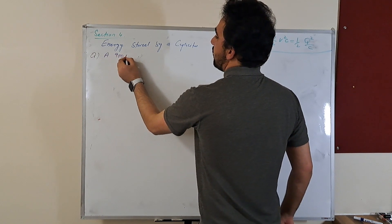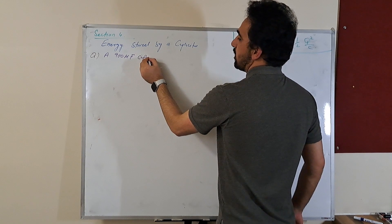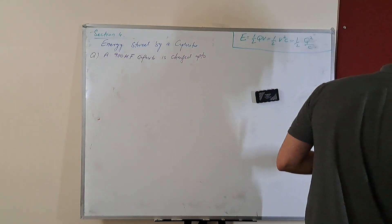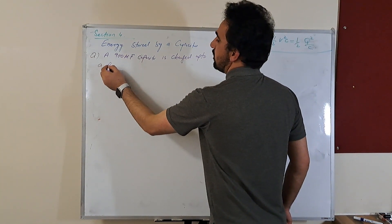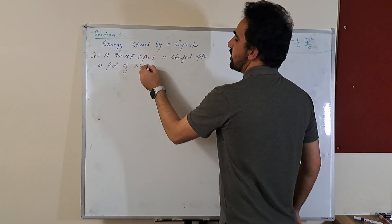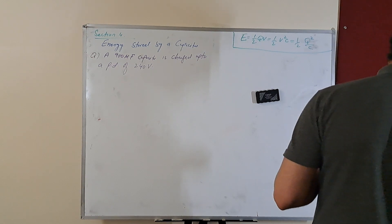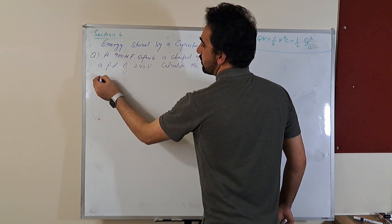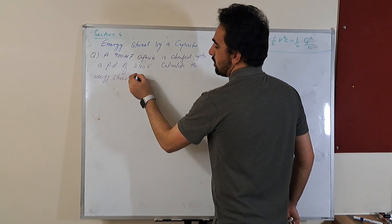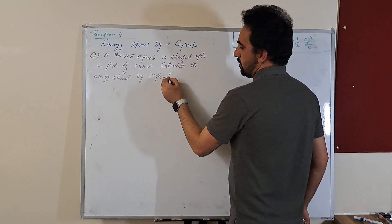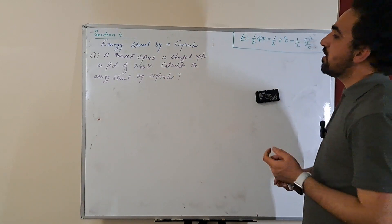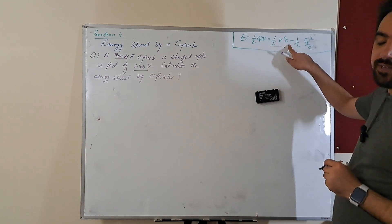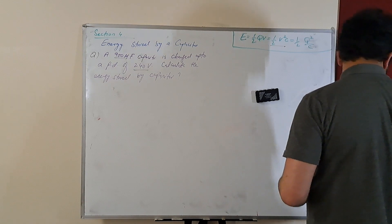A 900 microfarad capacitor is charged up to a potential difference of 240 volts. Calculate the energy stored by the capacitor. Because we have the potential and the capacitance, we can use the appropriate formula.